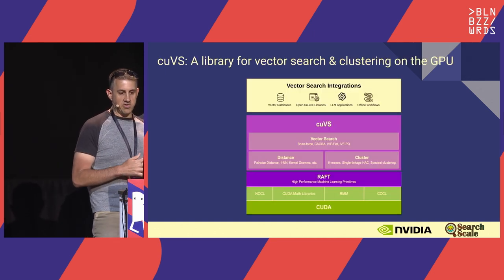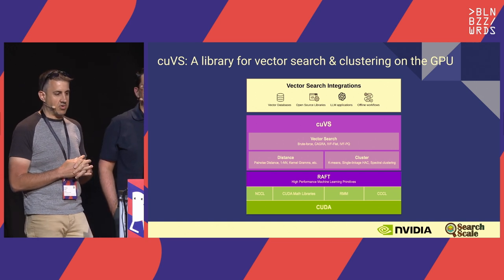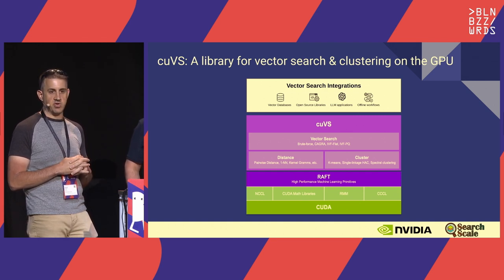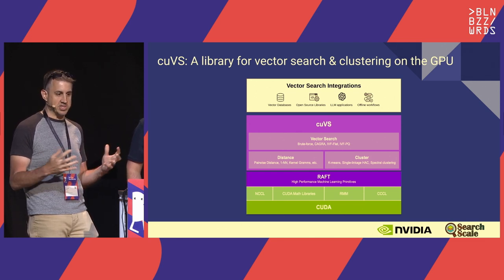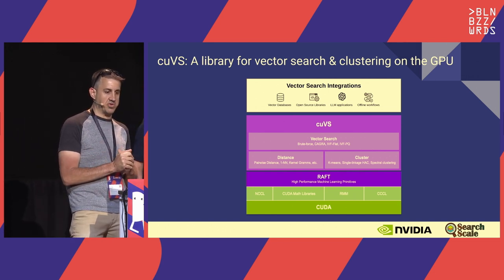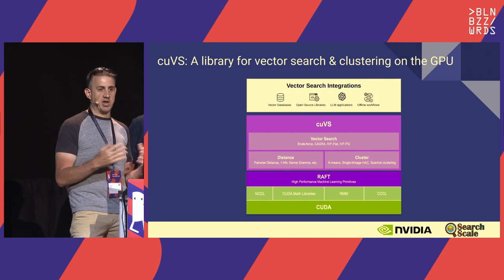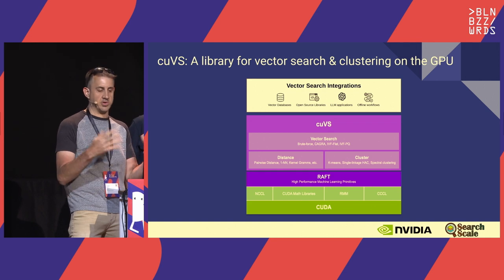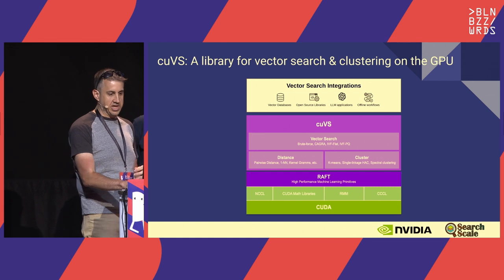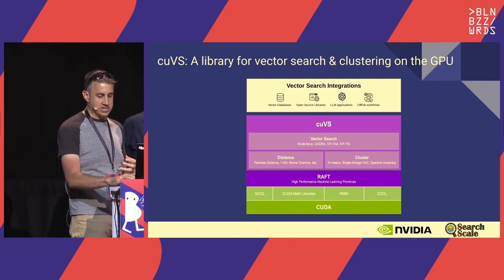The tech stack is built on the CUDA core, with many CUDA libraries involved. A few years back, we started realizing how expensive it is to build compute-intensive code, so we built a library called Raft with reusable building blocks for machine learning and graph processing. We originally included approximate nearest neighbor algorithms in Raft, but have since pulled those into their own dedicated library called cuVS—the CUDA Vector Search Library—which contains routines for vector search, clustering, and distance computations.